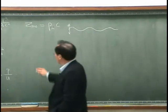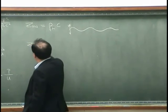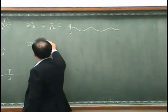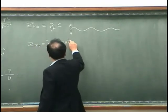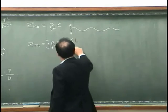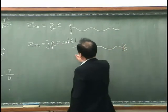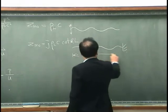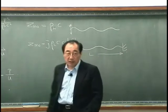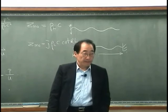And for the finite string, the driving point impedance is like this.